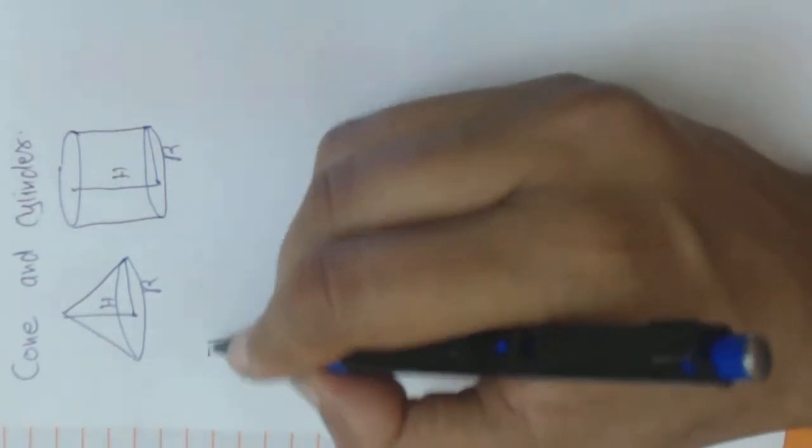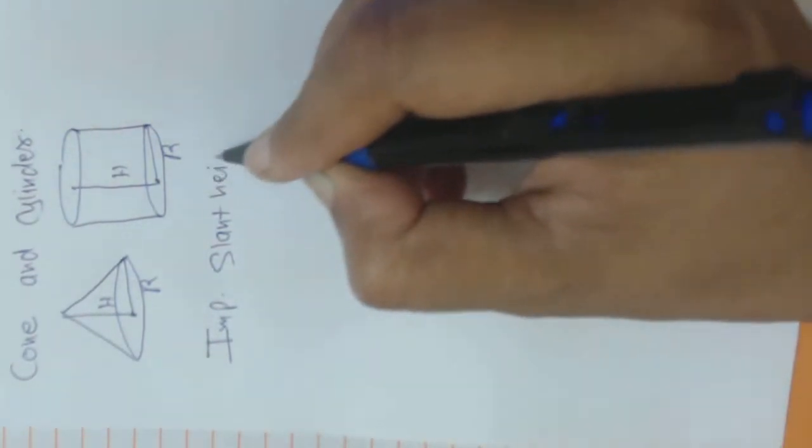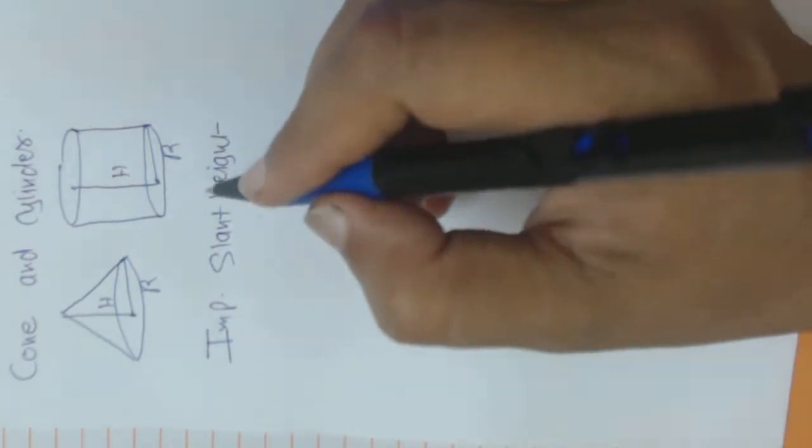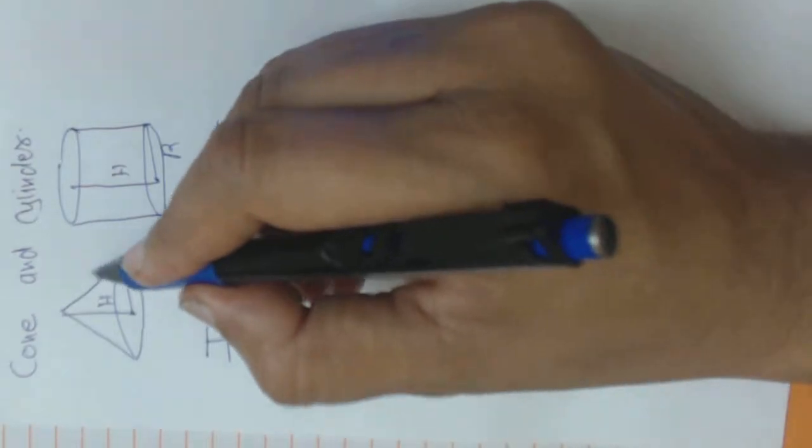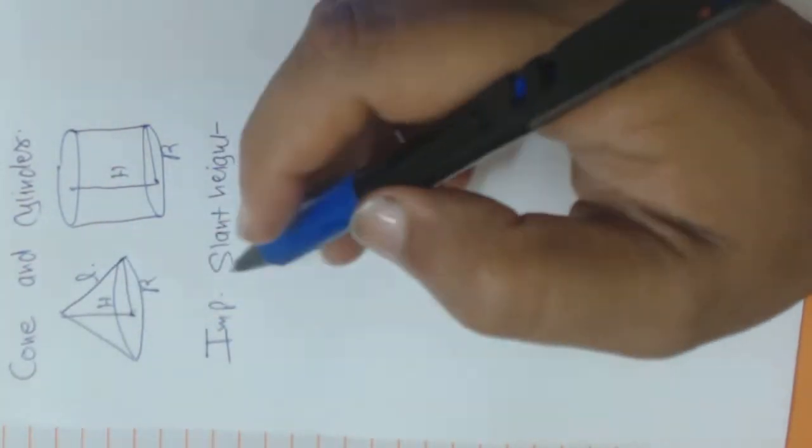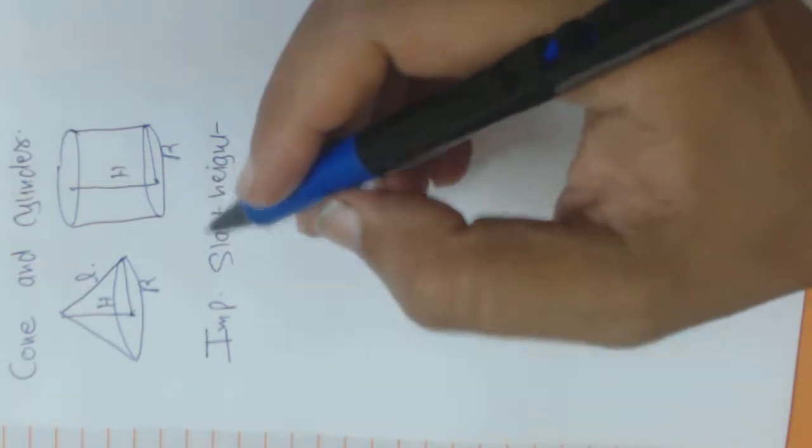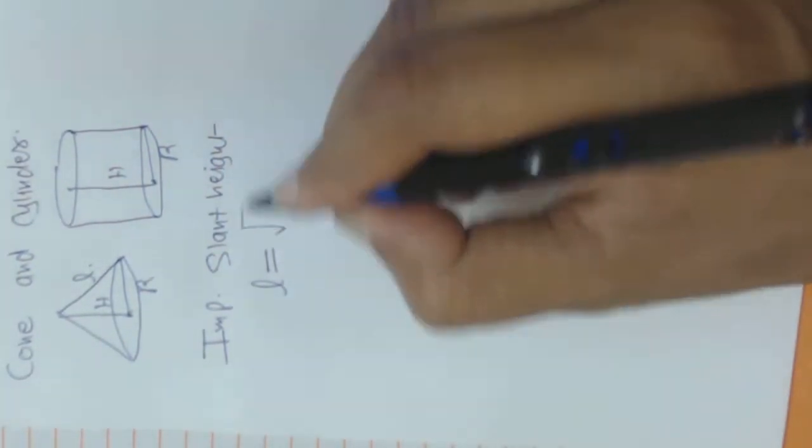Now for a cone, one more thing is important: slant height. It is something different from the height. Slant height is this and height is this. So don't get confused into height and slant height. The slant height L equals to square root of R squared and H squared.